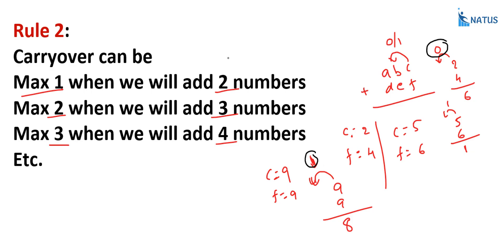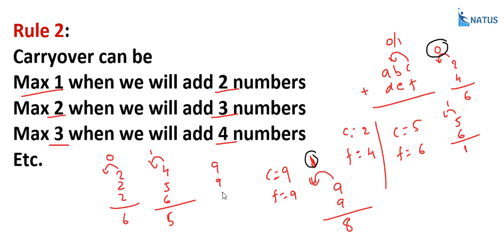When adding three numbers: take 2 plus 2 plus 2, the sum is 6 with carry 0. Take 4 plus 5 plus 6, the sum is 15 — write 5 and carry 1. The maximum case is 9 plus 9 plus 9 equals 27 — write 7 and carry 2. So when adding three numbers, carry is 0, 1, or 2 — maximum 2.